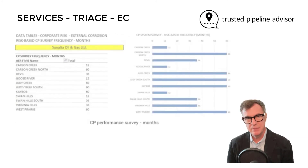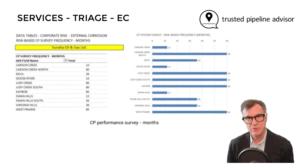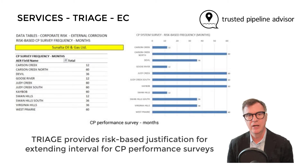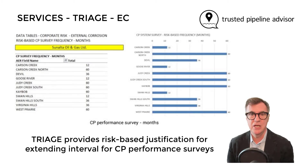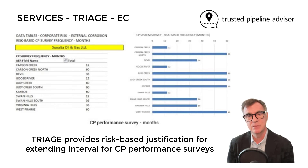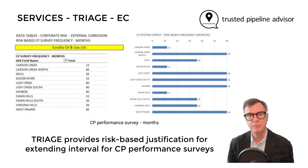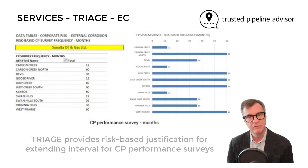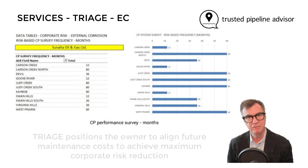These images are examples of the Triage guidance for external corrosion management. Triage presents a specific suggestion for appropriately scheduling CP system performance audits within a quality pipeline integrity management model for each operating field.